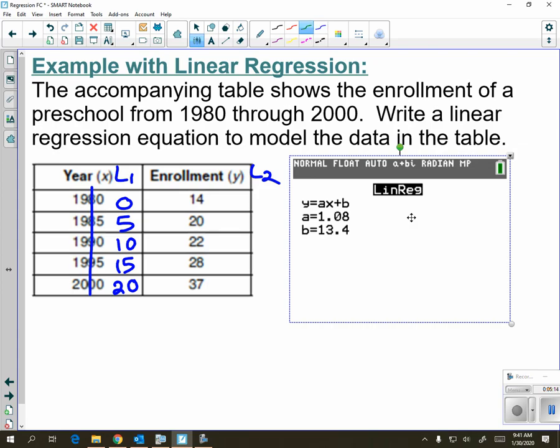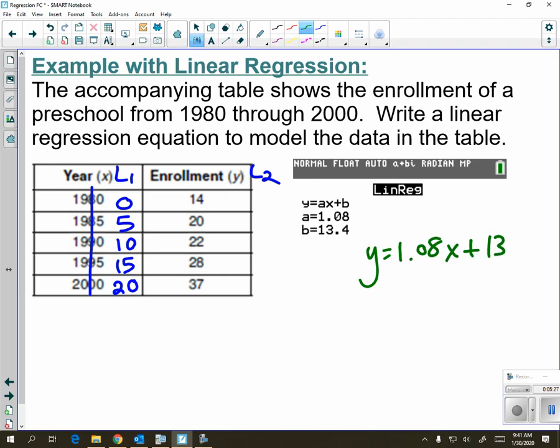From there, you're just going to sub in values. We have y equals our a was 1.08. Next, our b value was 13.4. Now, these are nice numbers, so you can just write it in. But be careful, a lot of questions tell you how to round.